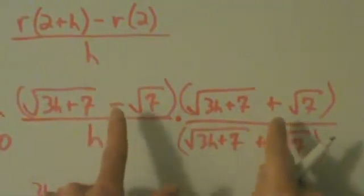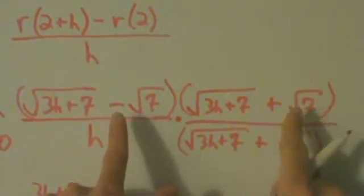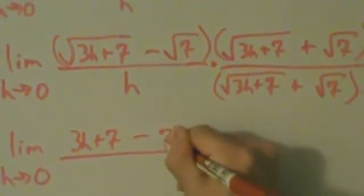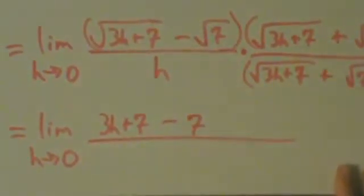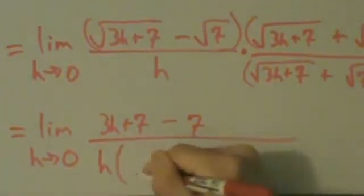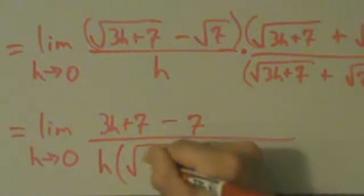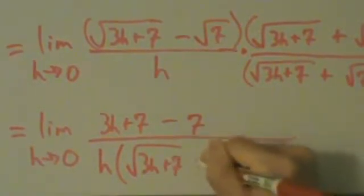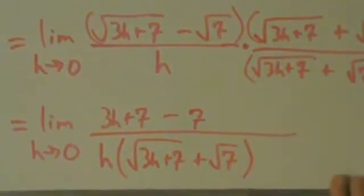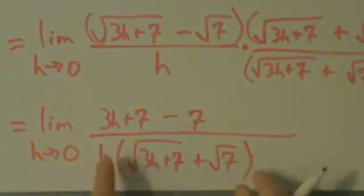And then last is minus root 7 times positive root 7, which means minus 7. And then on the bottom we still have h times the square root of 3h plus 7 and then plus the square root of 7, like that. And again, don't forget these parentheses. They have to be there.